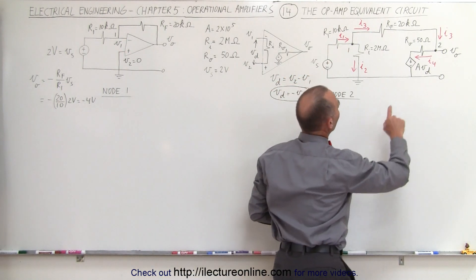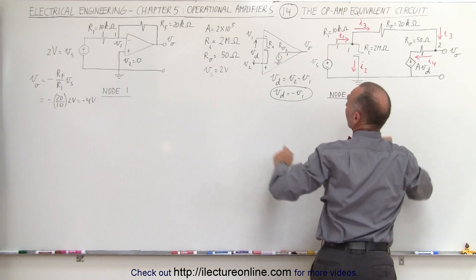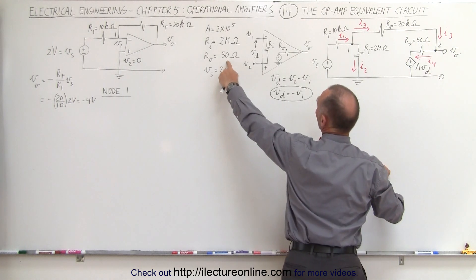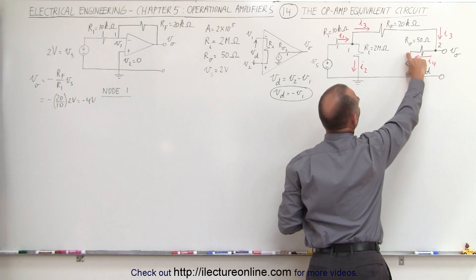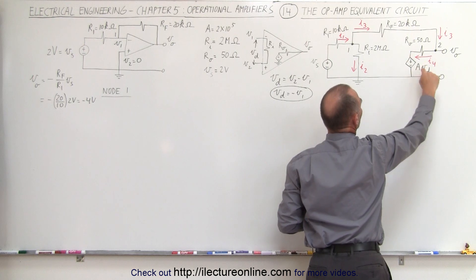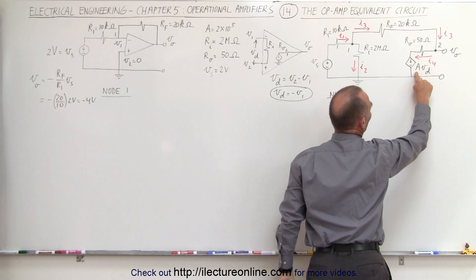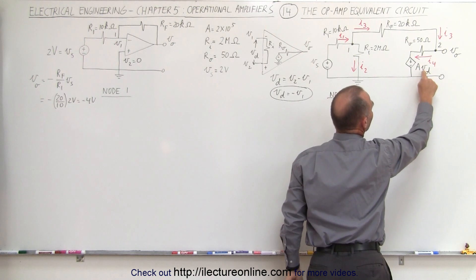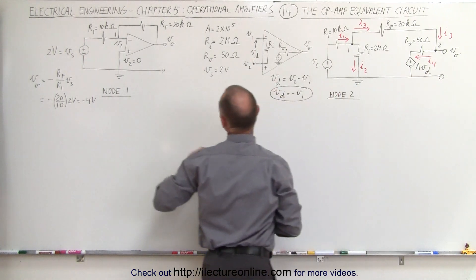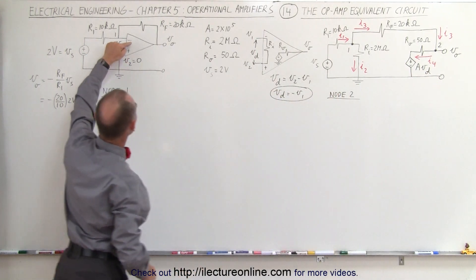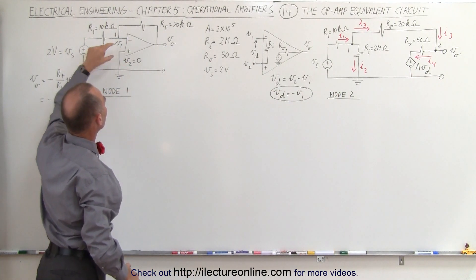In addition, at the output we have a 50 ohm output resistor. Then we have the dependent source equal to the open-loop gain times the voltage difference V_D between the inverting and non-inverting terminals.